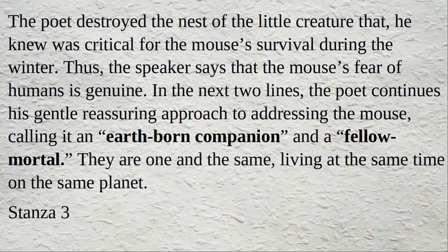The poet destroyed the nest of the little creature that he knew was critical for the mouse's survival during the winter. Thus, the speaker says that the mouse's fear of humans is genuine. In the next two lines, the poet continues his gentle, reassuring approach, calling it an 'earth-born companion' and a 'fellow mortal.' They are one and the same, living at the same time on the same planet.